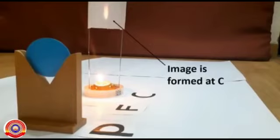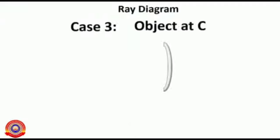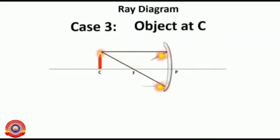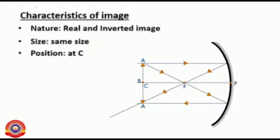Next, the object is placed at C. Where does the image form? If the object is placed at C, the image is also formed at C. A real and inverted image is formed, and the size of the image is the same as that of the object.